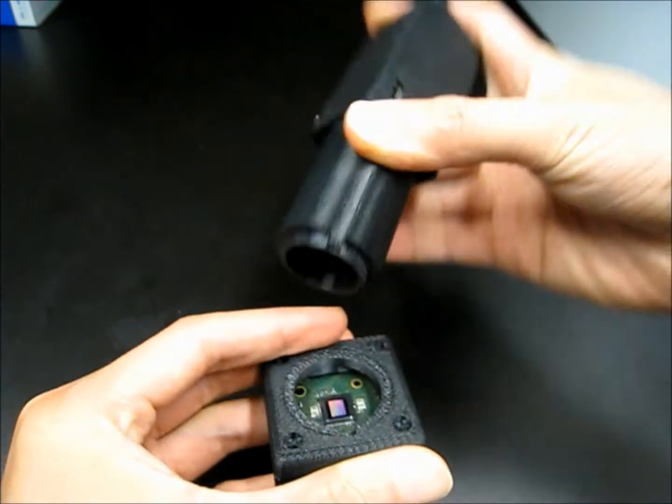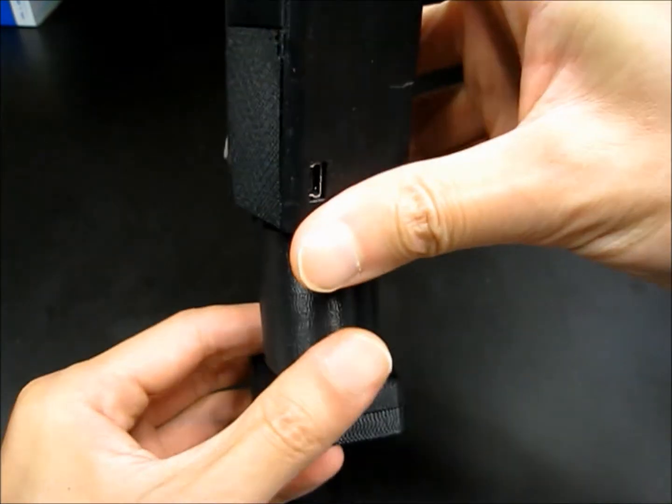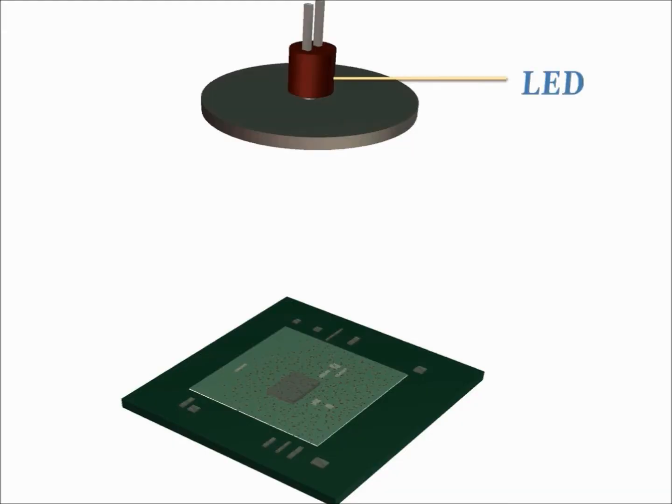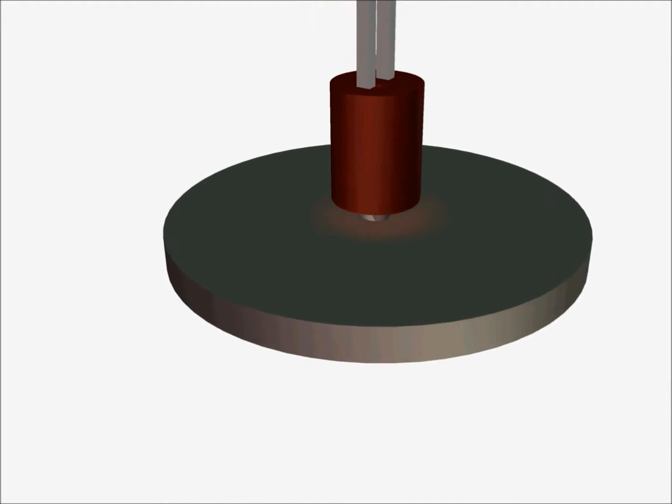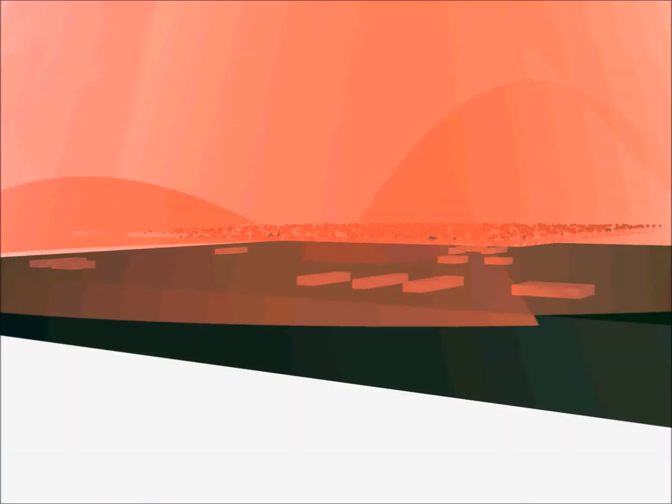Our microscope does not have lenses, so we cannot focus the image of the object on our camera sensor. Instead, we use a technique called holography, which lets us record a defocused image of the object called the hologram, and then digitally process it to get the focused image of the object, similar to a traditional microscope image.